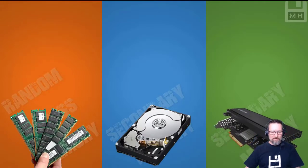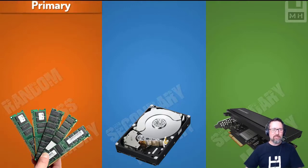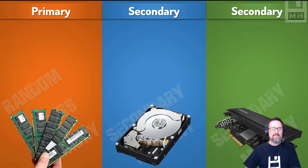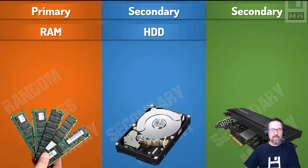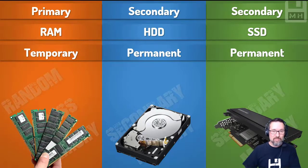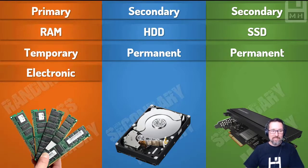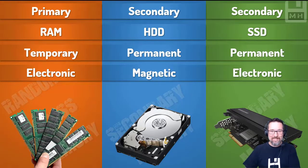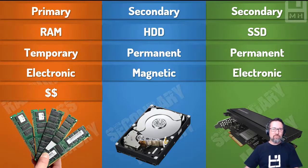Let's compare these types of storage: RAM, HDD (hard disk drive), and SSD (solid state drive). RAM is primary; HDD and SSD are both secondary. RAM is temporary; HDD and SSD are both permanent storage. RAM is electronic; hard disk drives are magnetic; and solid state drives are electronic as well. Electronic seems to be the way to go.